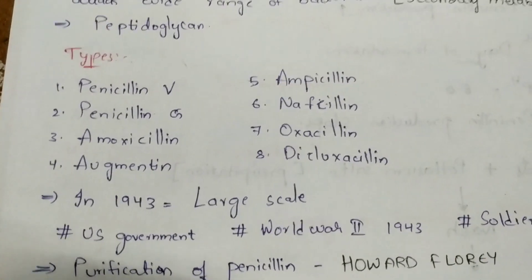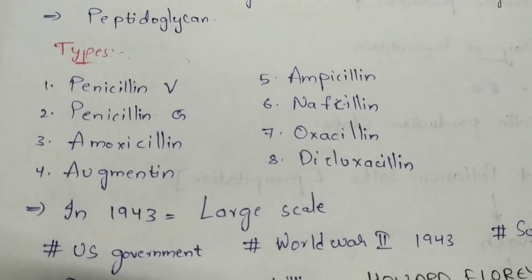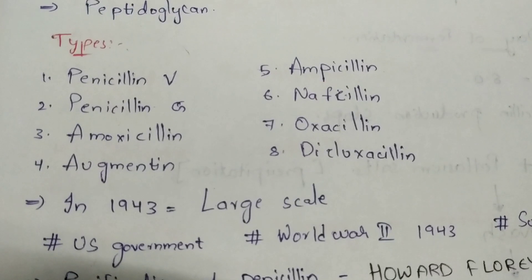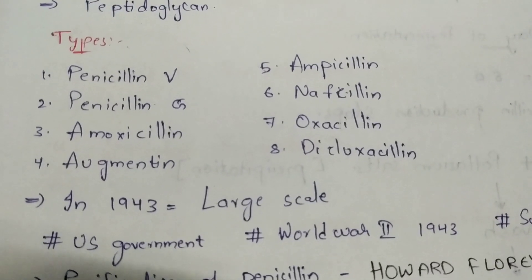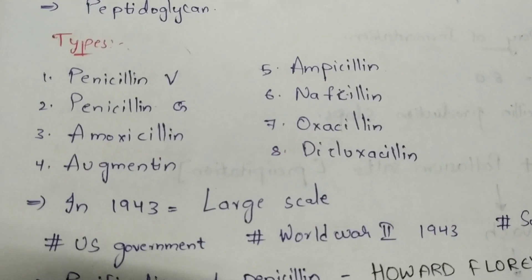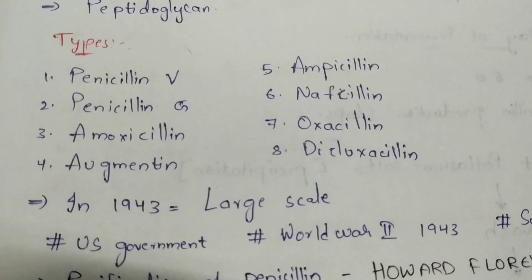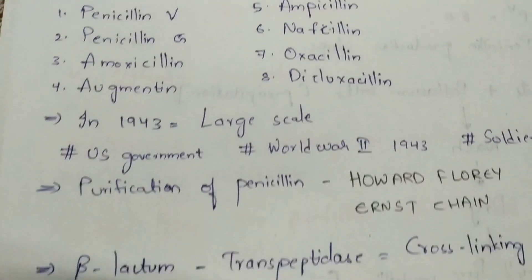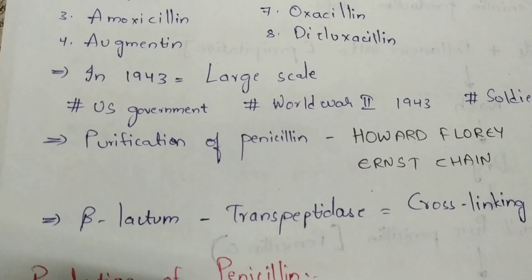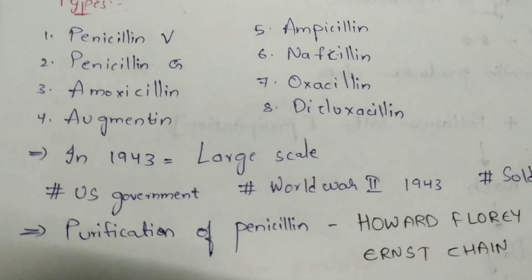Penicillin comes in different types: Penicillin V, Penicillin G, amoxicillin, augmentin, ampicillin, napicillin, oxacillin, and dicloxacillin. All of these penicillins are extracted from Penicillin G only.